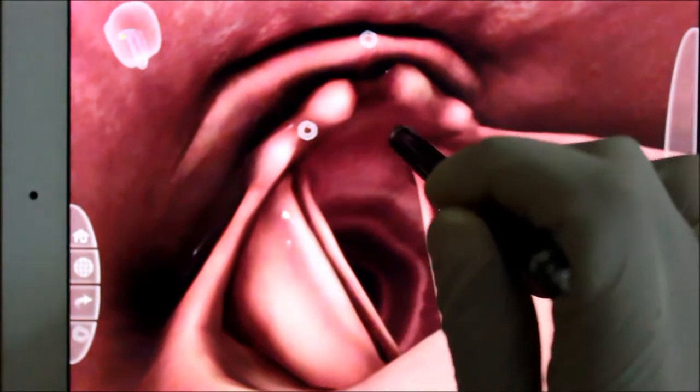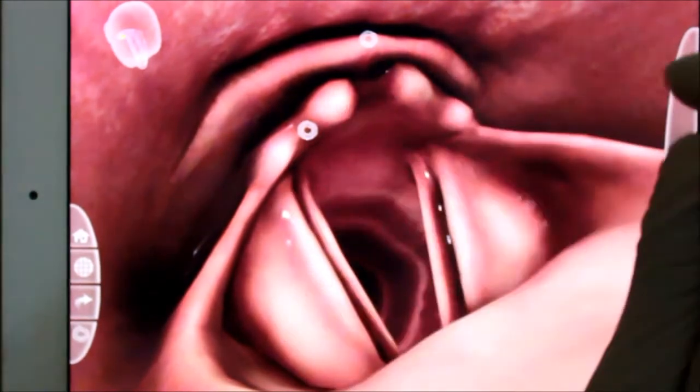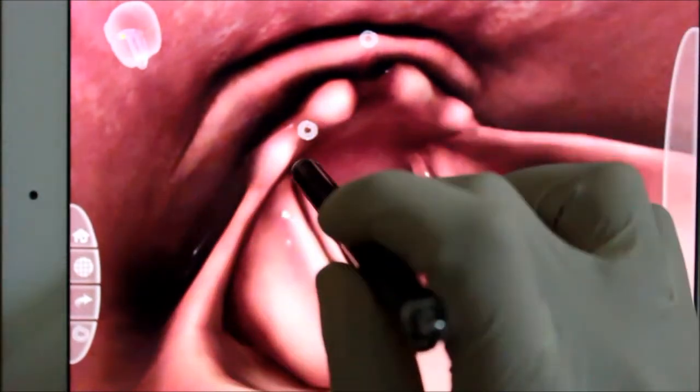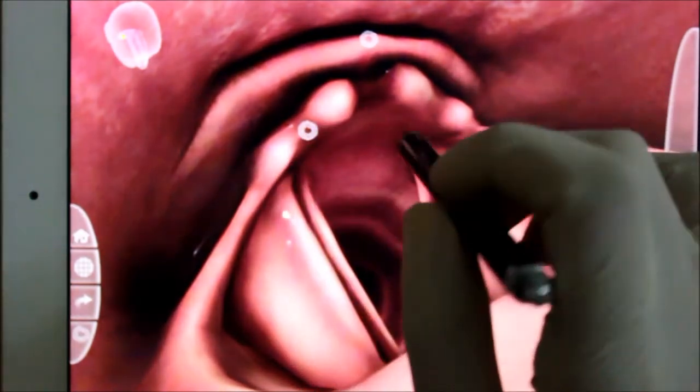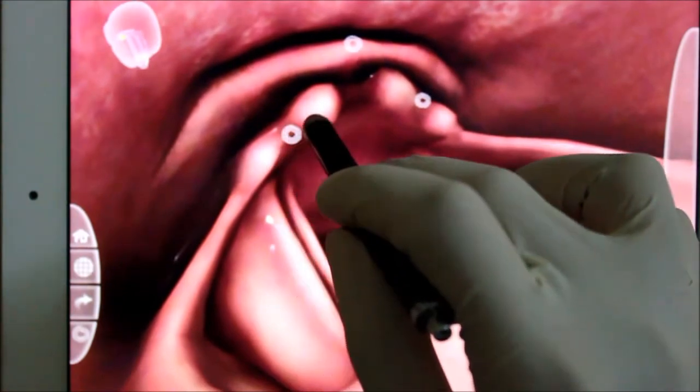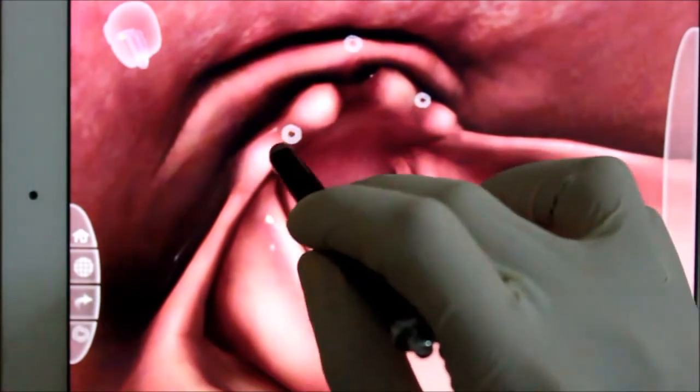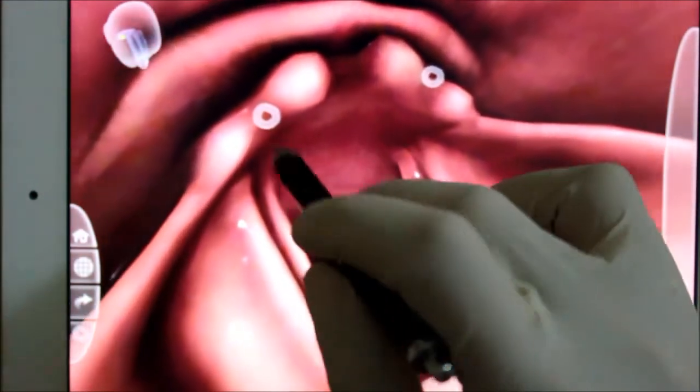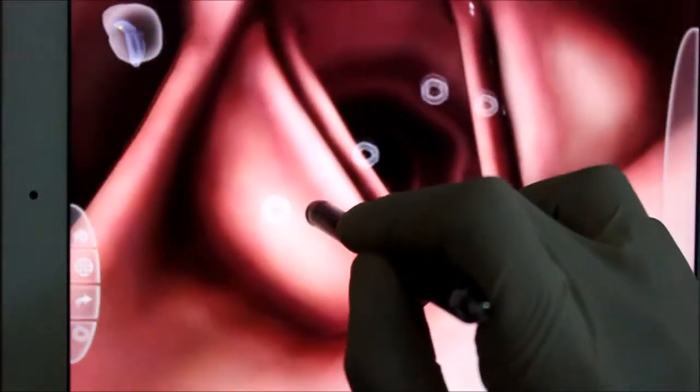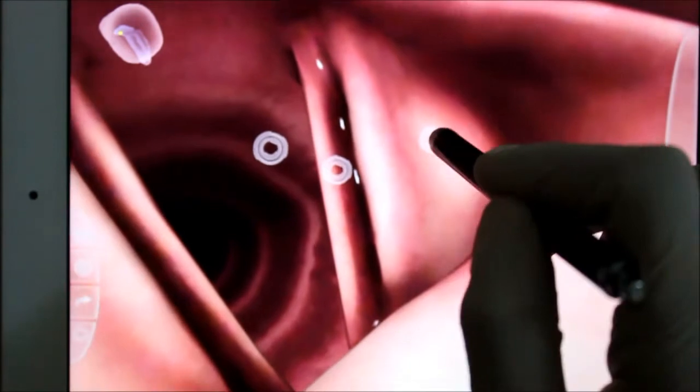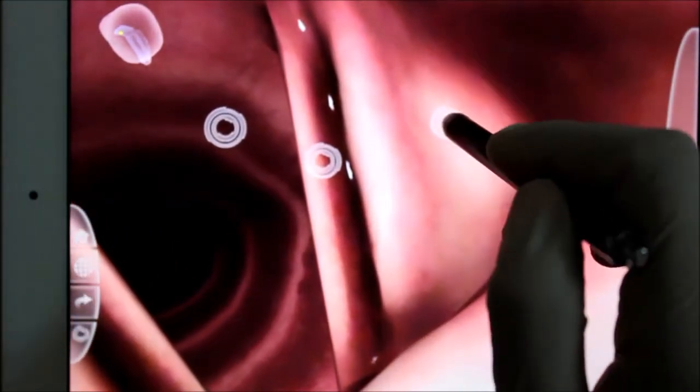our larynx to name: we have thyroid cartilage, cricoid cartilage, cuneiform cartilage, arytenoid cartilage, and many more. Here you can see the fold of mucous membrane over them. They form the part of attachment of the vocal cords also and give the structural integrity. As we go down below we can see the false vocal cord.